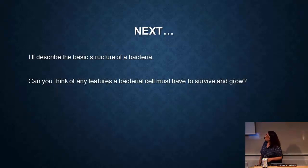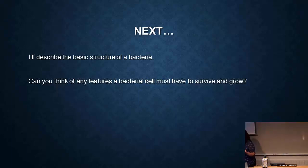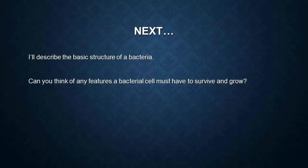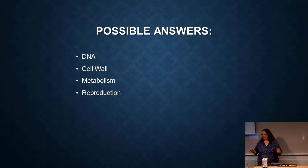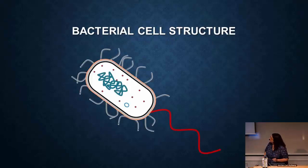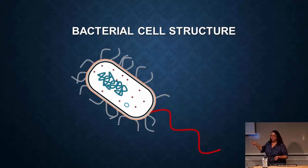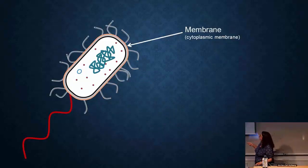In the next section I'm going to describe the basic structure of bacteria. Can you think of any features a bacterial cell must have to survive and grow? Here's my drawing of a typical bacteria — there are many types and this is a generalization. I'm going to go through the different parts and features. The first thing I want to talk about quite a bit is the membrane.